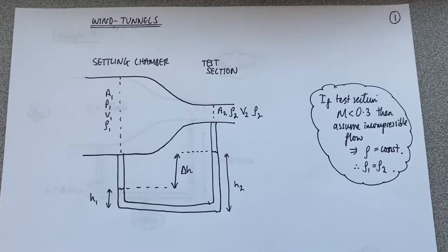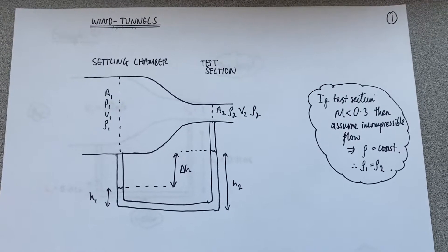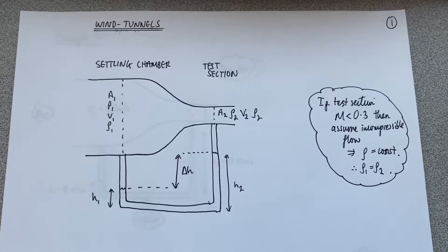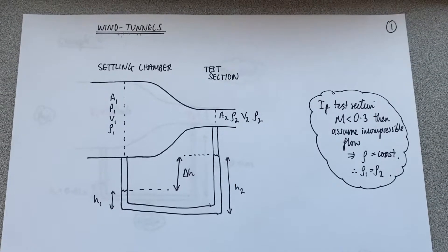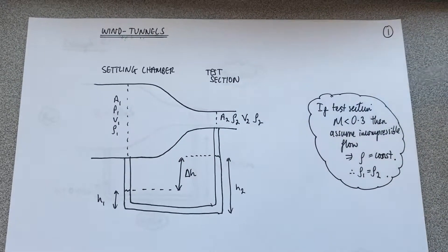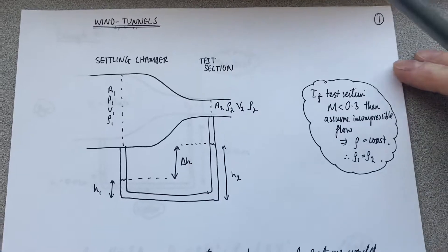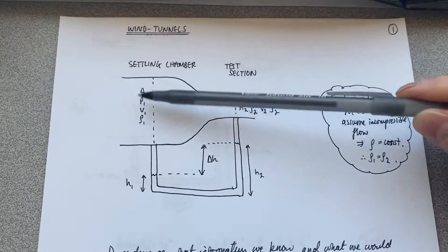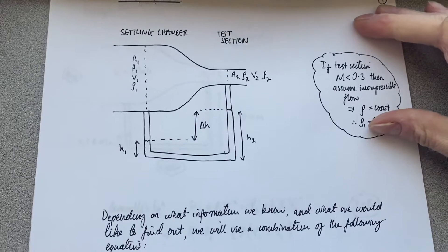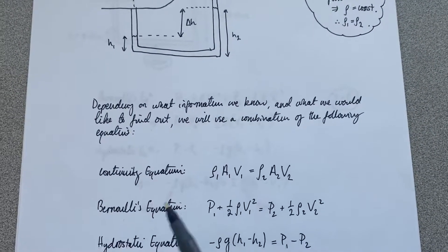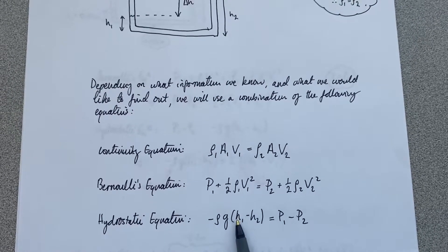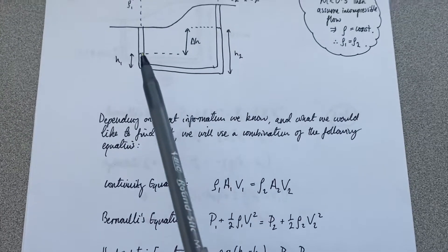pitostatic system. So for most of these calculations, we're going to assume, as we've said in class, that the Mach number in the test section is below 0.3, and therefore we can assume that the flow is incompressible. Depending on how much of this information that we know and what we would like to find out, there are three key equations that we need, and we might need to combine them. So that we have the continuity equation, Bernoulli's equation, and the hydrostatic equation, the one which involves the difference in height in fluid level in the pitostatic system.